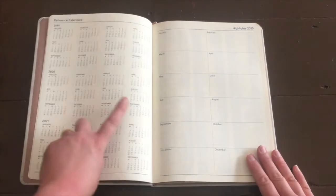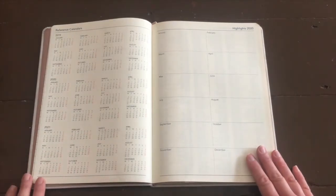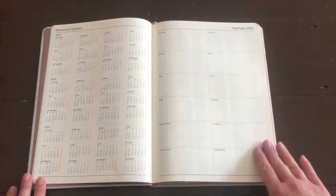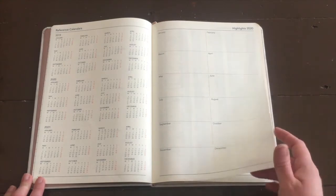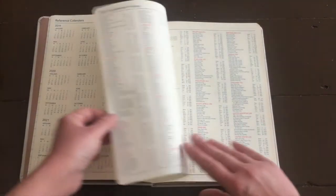ruler on the left hand side, personal information on the right, straight into your reference calendars for 2019, 2020, and 2021. And then we have a highlights page for 2020.